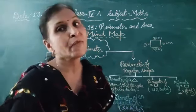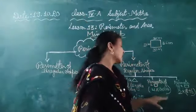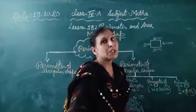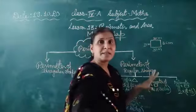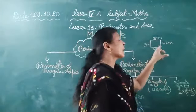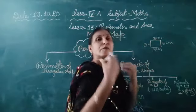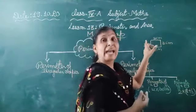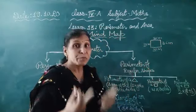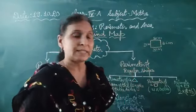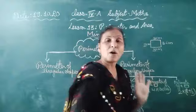Toh hum is process se bhi find out kar sakte hain, par humne iske liye ye formula use kiya hai. Is tarah easily we can find out the value of the perimeter of a square. Agar yahan pe suppose long measurement di hai, jaise 12 cm, 14 ya 25 cm, toh hum isko 4 se multiply kar denge and we can get our answer.